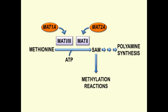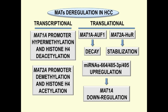However, inhibition of the MAT2 enzyme by its reaction product and active polyamine synthesis reduces SAM availability for transmethylation, with consequent global DNA hypermethylation. These changes depend on MAT1A promoter hypermethylation and histone H4 deacetylation, whereas opposite changes occur in the MAT2A promoter.